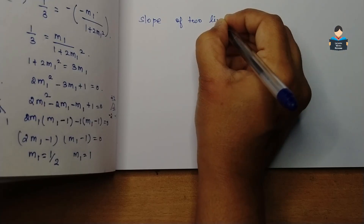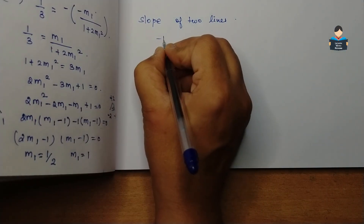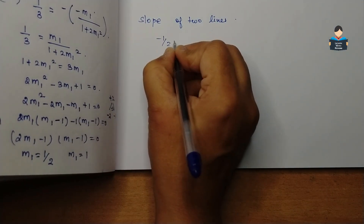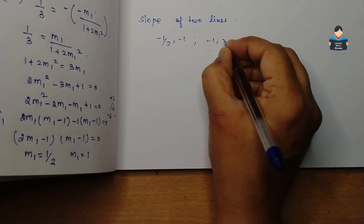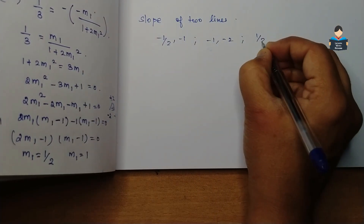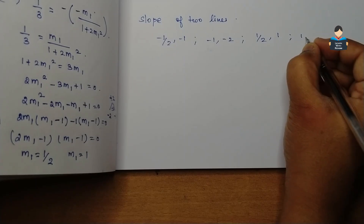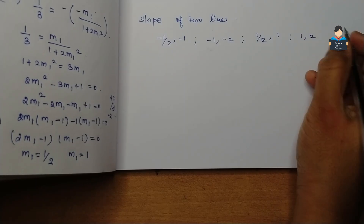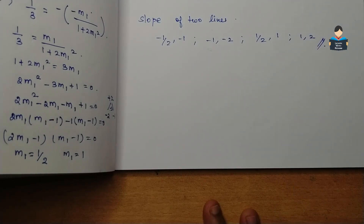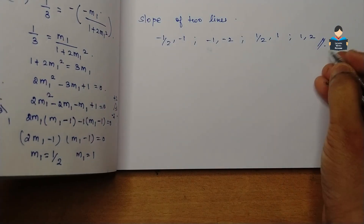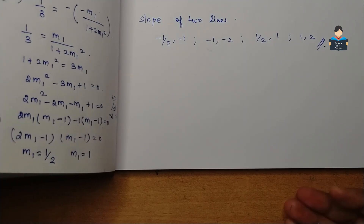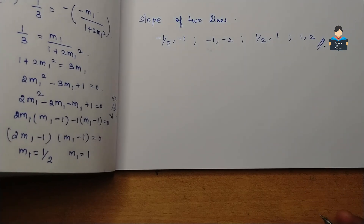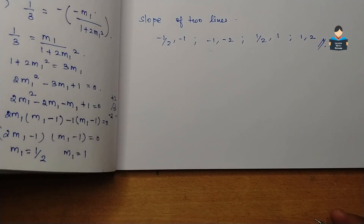So the slopes of the two lines are: minus 1 by 2 and minus 1, or minus 1 and minus 2, or 1 by 2 and 1, or 1 and 2. That completes the video. Please like, share, subscribe, and thank you.